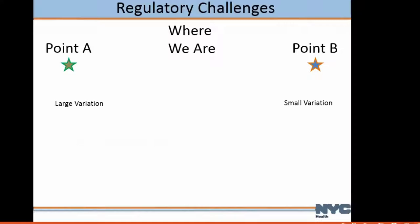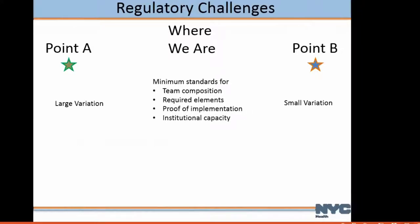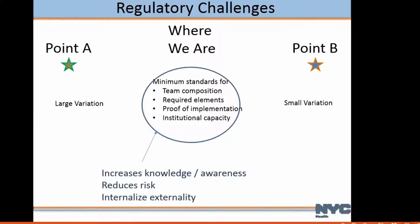Where are we with New York City and the cooling tower regs? We have minimum standards for team composition, minimum standards for required elements, and standards for proof of implementation — all the different records that need to be kept. There's an institutional capacity that needs to be developed to do all of this. This increases knowledge and awareness, it reduces risk potentially, and more importantly it internalizes that externality.